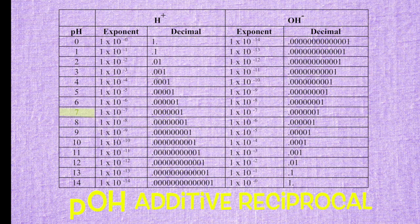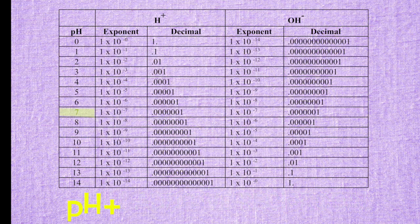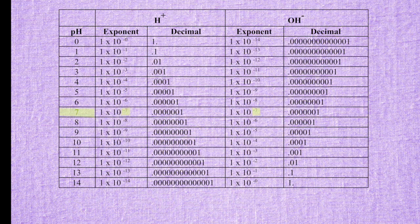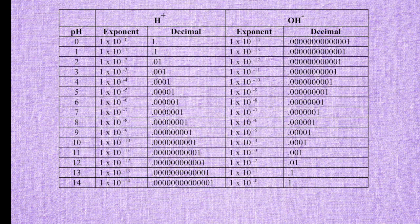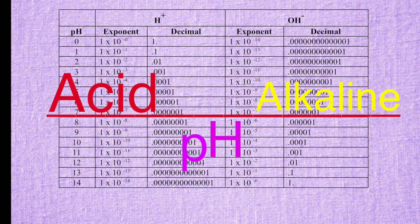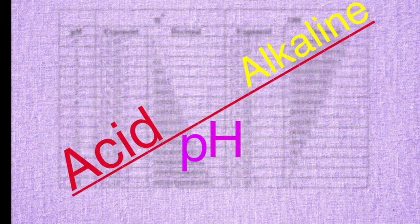pOH is the additive reciprocal — pH plus pOH always equals 14. Adding the exponents: 7 and 7 equals 14; 3 and 11 equals 14; 12 and 2 equals 14. Don't look at the numbers — look at the shape. As one column gets larger, the other gets smaller. pH is always a balance between acid and alkaline.